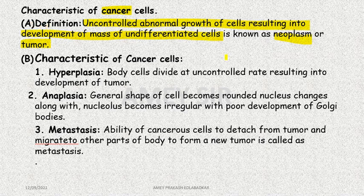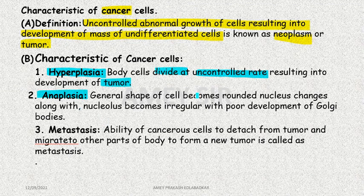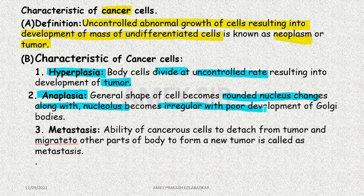What are the characters of cancerous cells? First is hyperplasia — body cells divide at an uncontrolled rate resulting in tumor development. Second character is anaplasia — the general shape of the cell becomes round, nucleus changes, becomes irregular with poor development of Golgi bodies. And then there is metastasis.